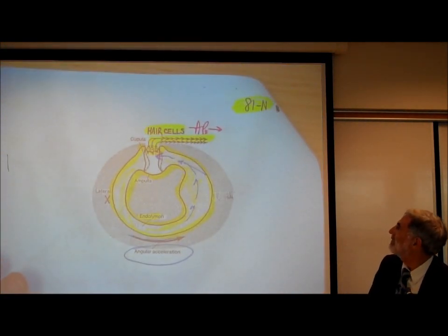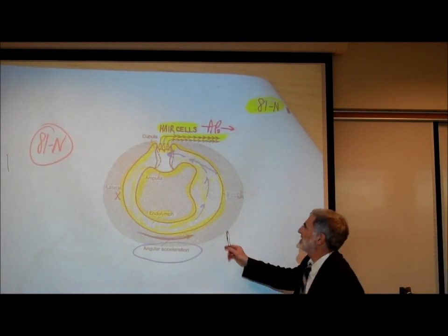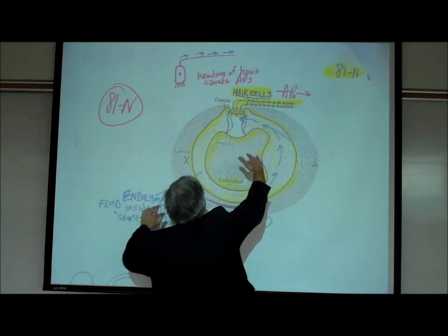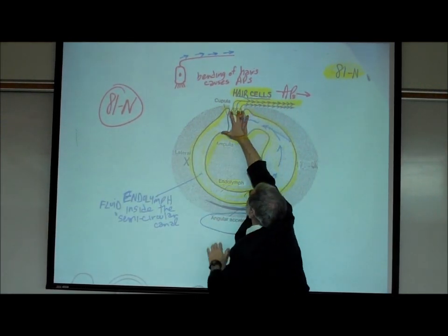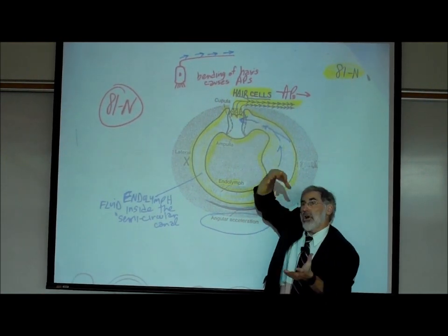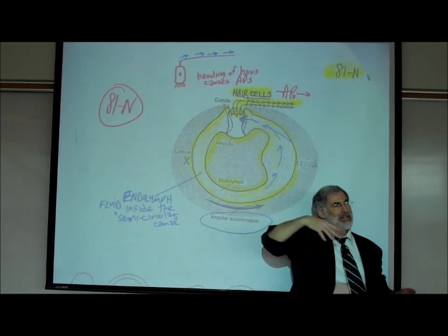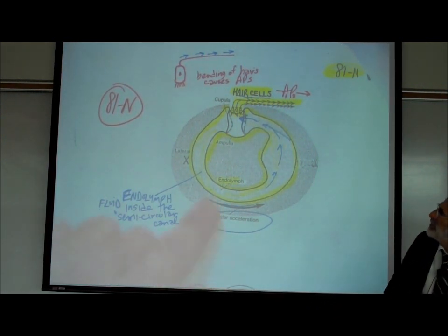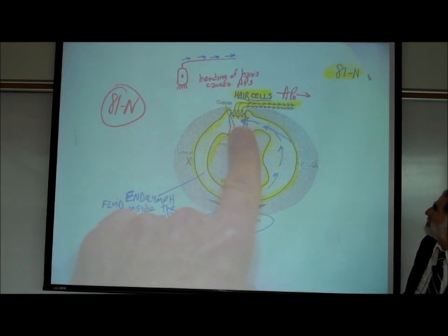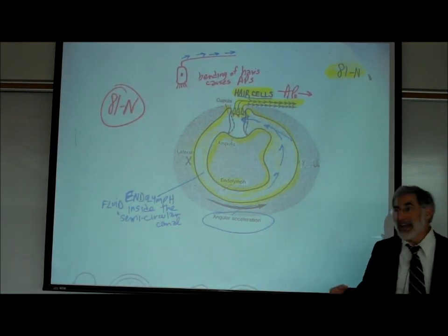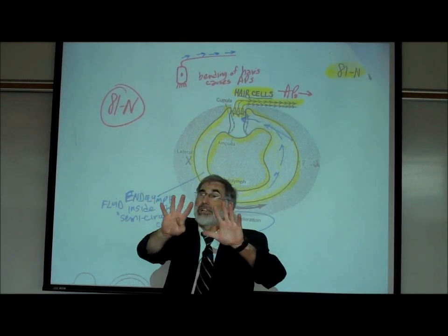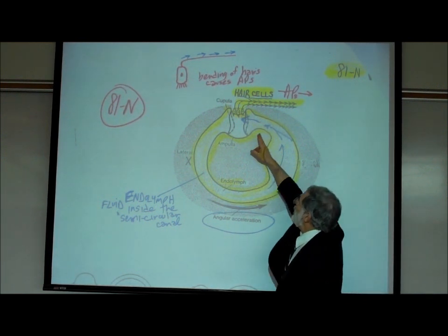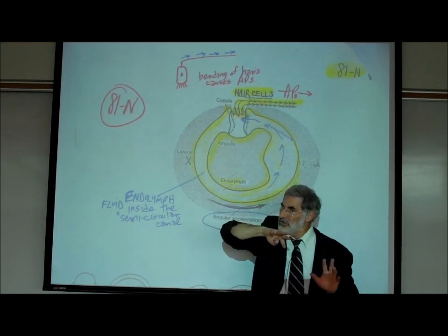On page 81N, this is showing a semicircular canal filled with fluid. Right up here, this part of the canal is bulging a little bit — where it bulges and is enlarged is called the ampulla. What I want you to know is that located in the ampulla are hair cells. They were in the cochlea for hearing, and they're in the semicircular canals as well.